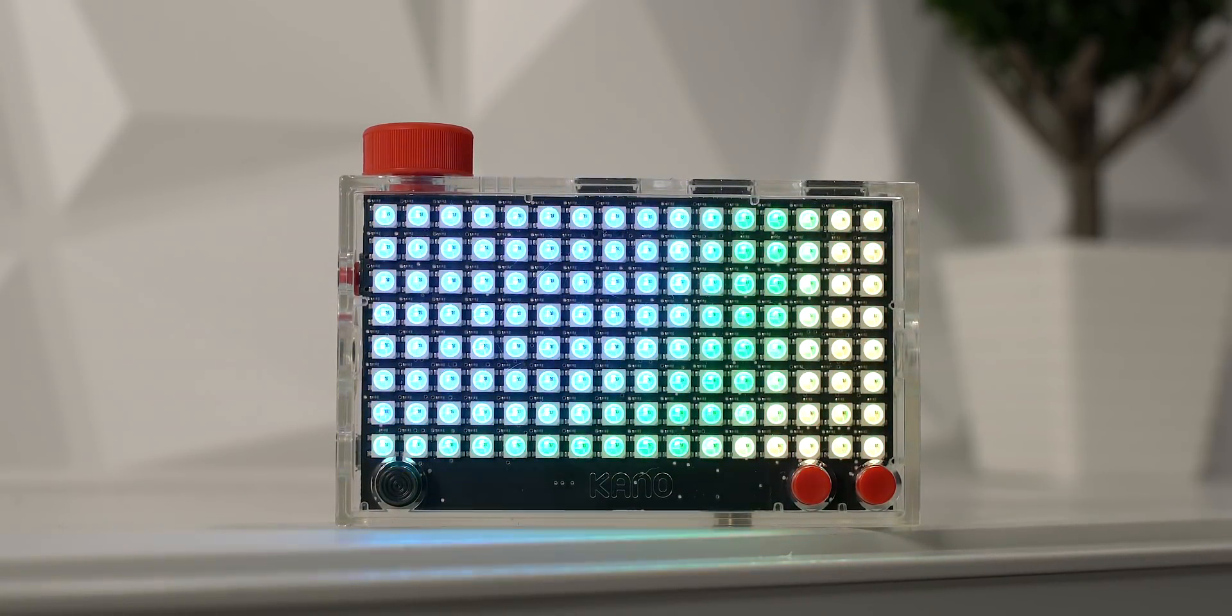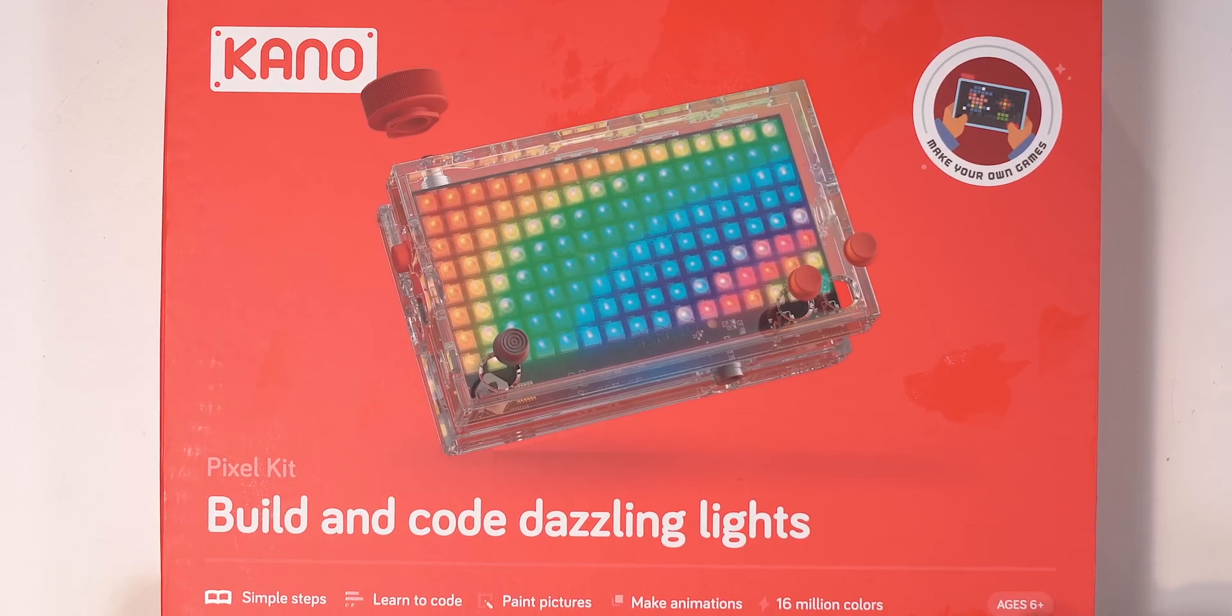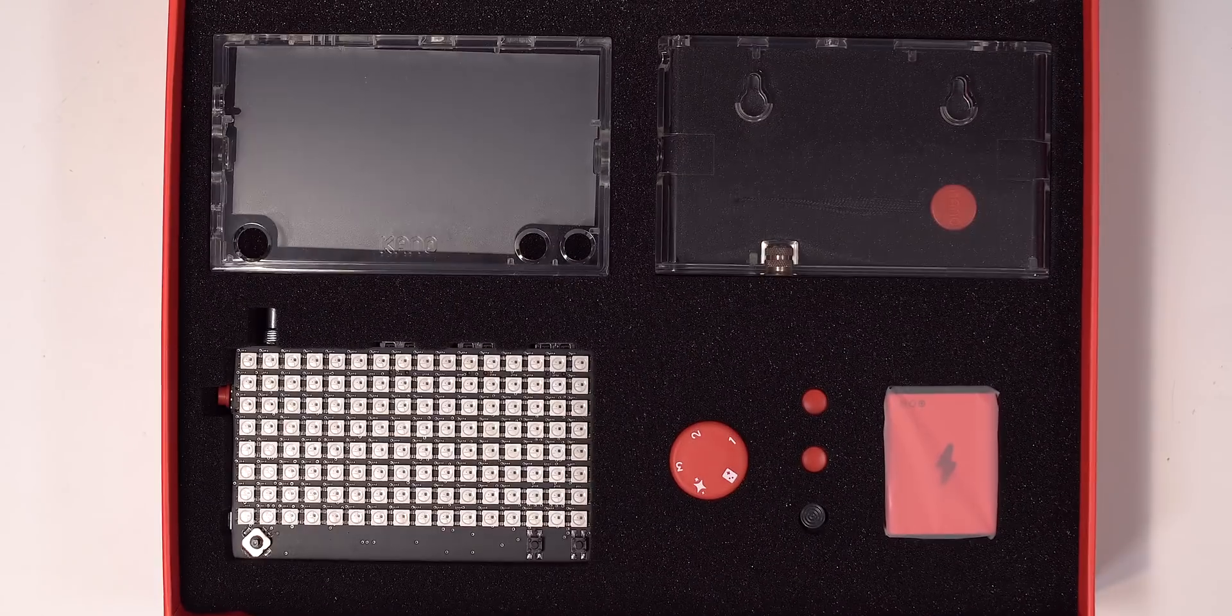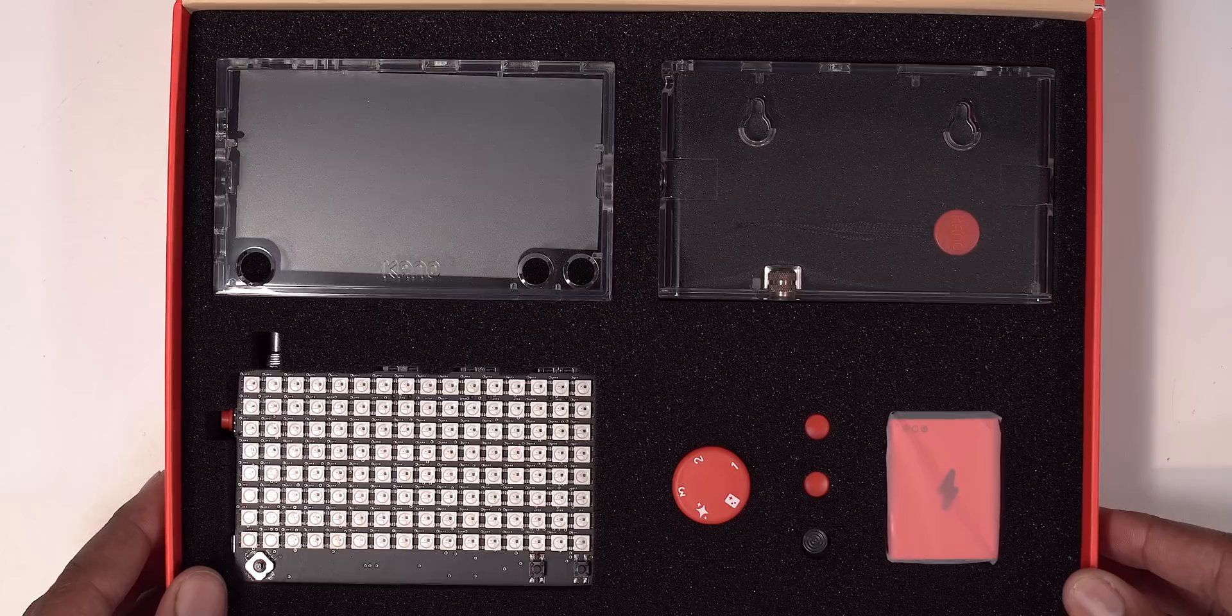The Kano Kit works with Mac and PC and you get unlimited lifetime support so you can always reach out to them if you have any questions. One neat thing about the Pixel Kit is that you actually assemble it yourself. Now don't worry, it's not too hard to do. And what's cool about this is that you get a glimpse in the world of hardware and how it actually works. It's like building a mini PC.